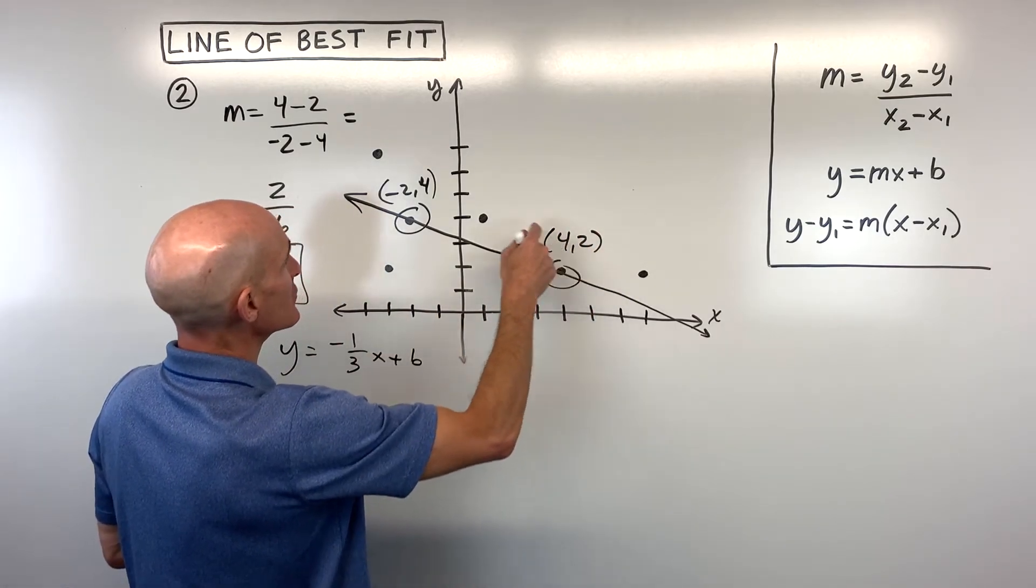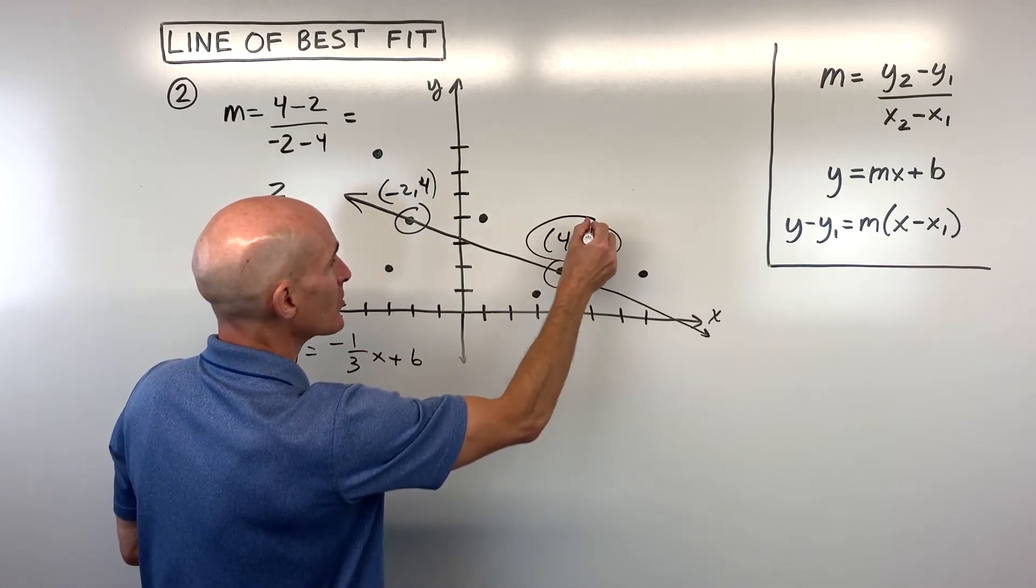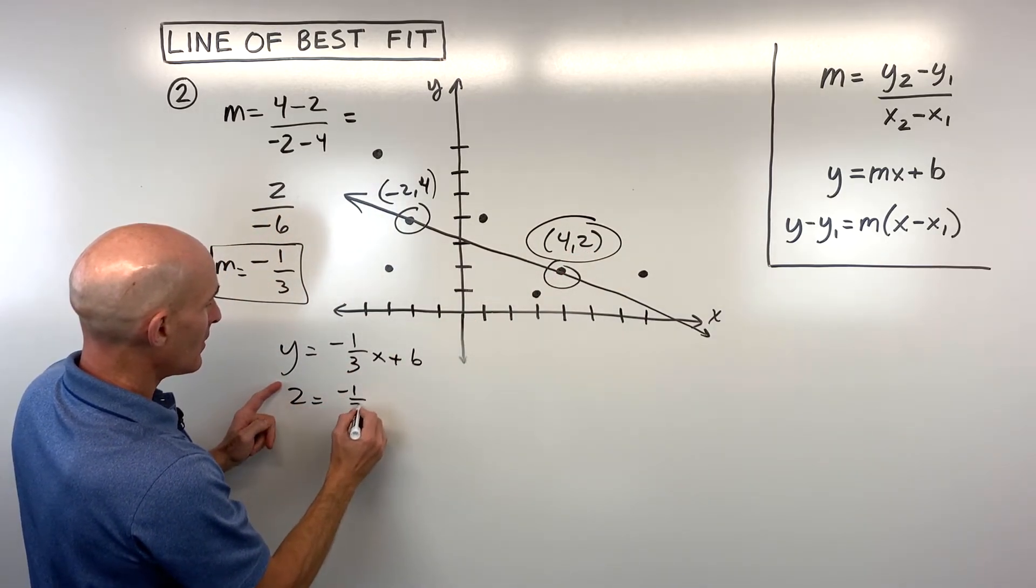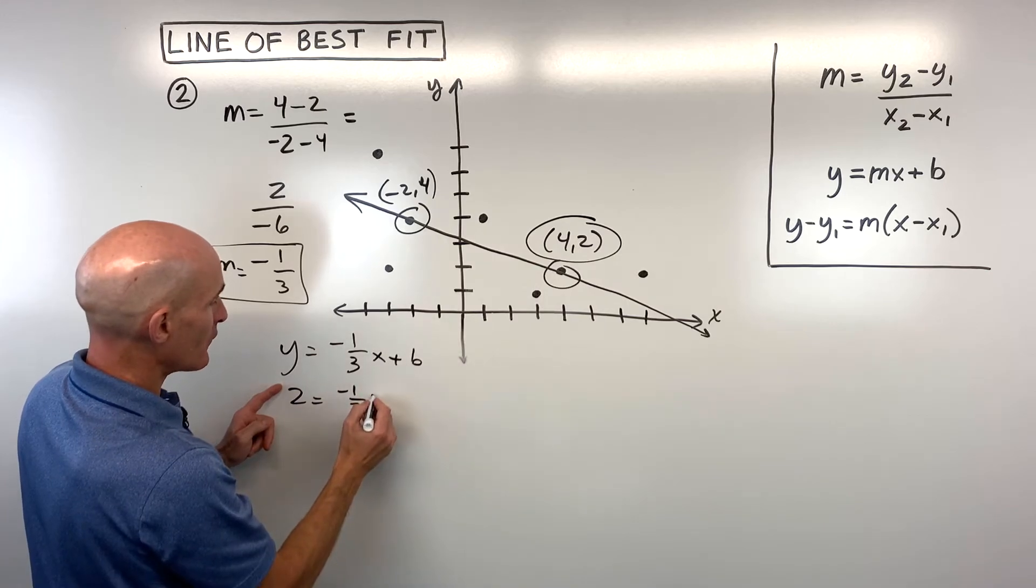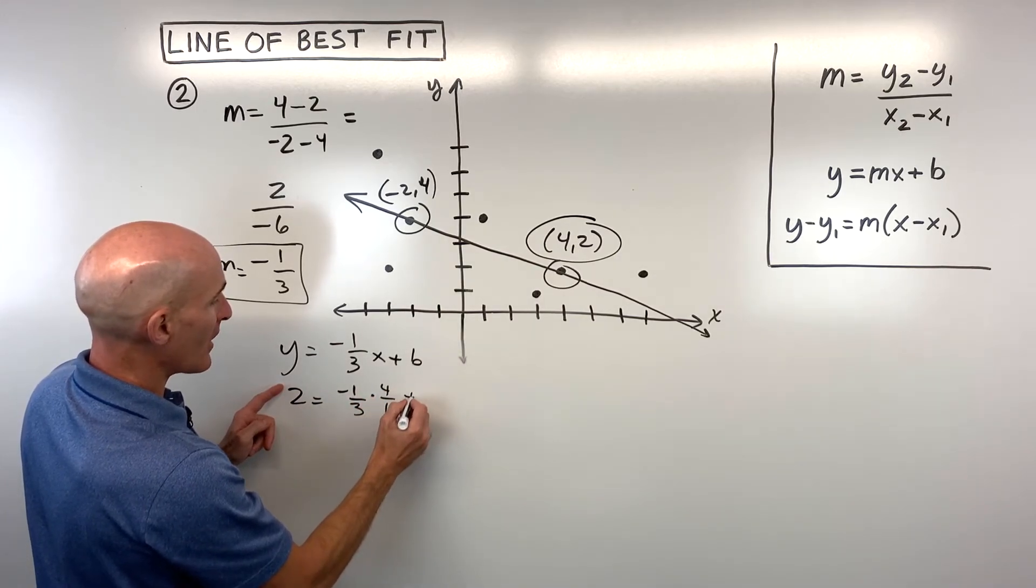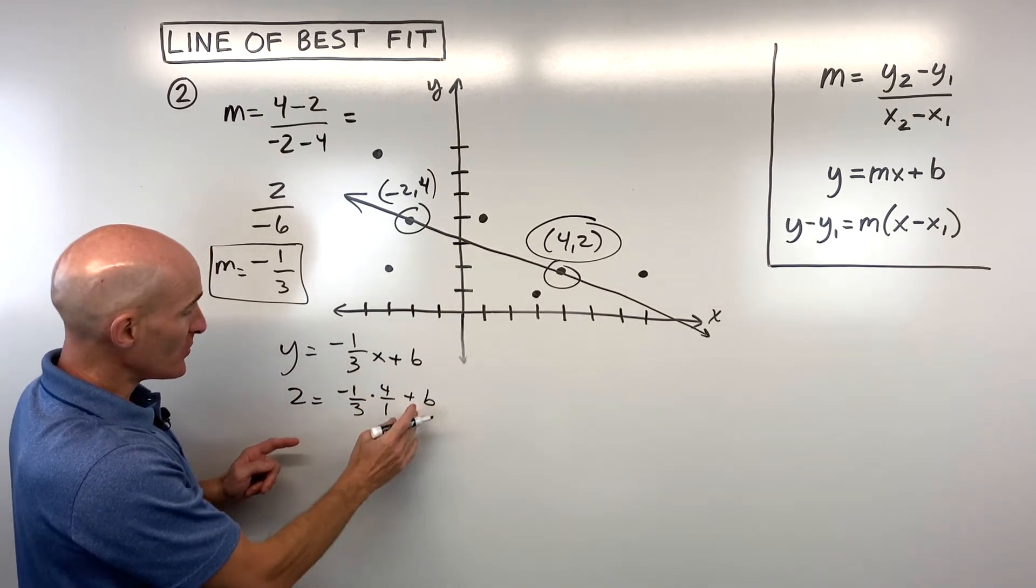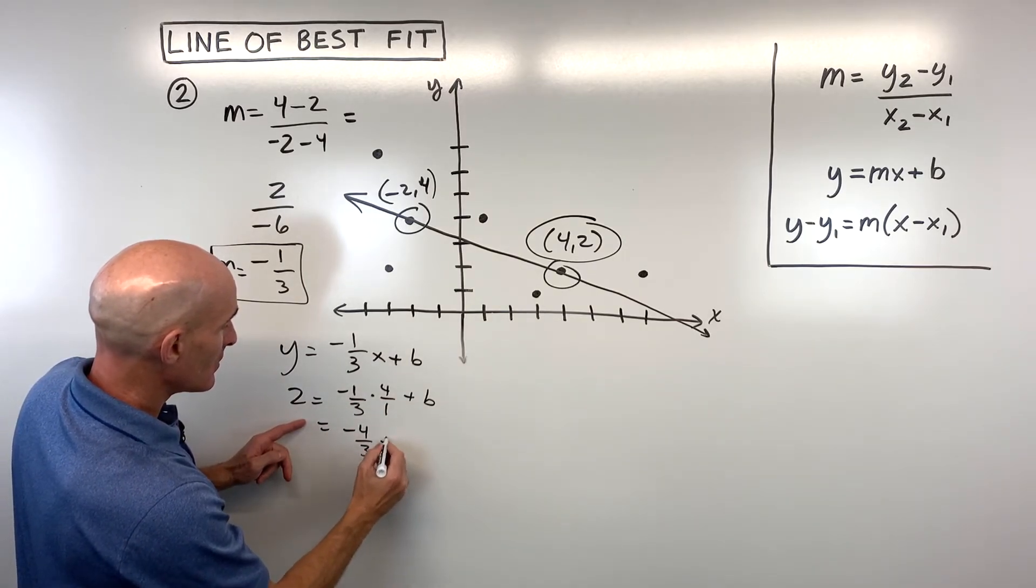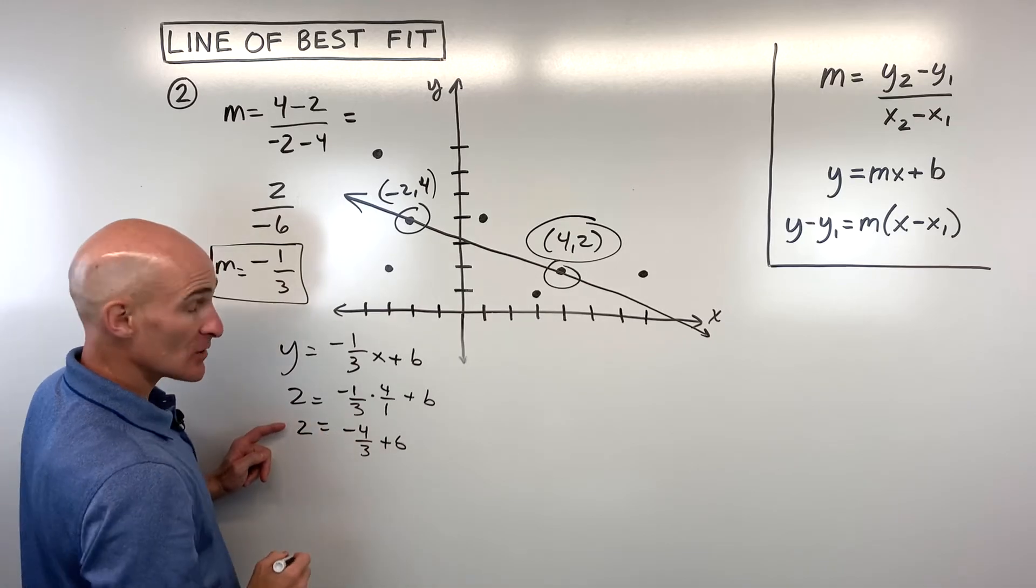So I would say y is equal to negative 1/3 x plus b. We don't know the b or the y-intercept. You can pick one of the points, either this point or this point. I think I'm just going to use this one right here. I'm going to put 2 in for y, and I'm going to put 4, which is like 4 over 1, in for x. And now we can solve for b. So this comes out to negative 4/3 plus b is equal to 2.